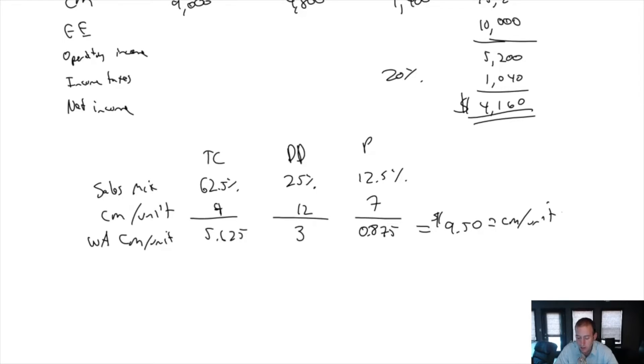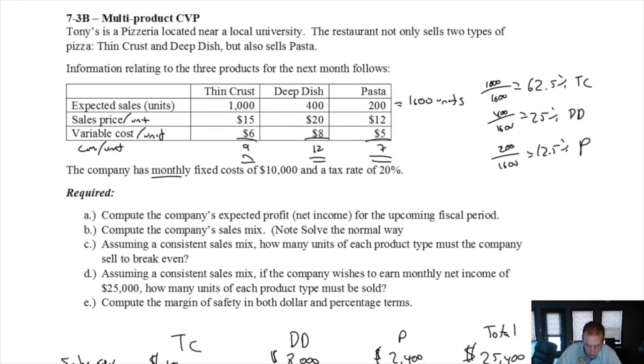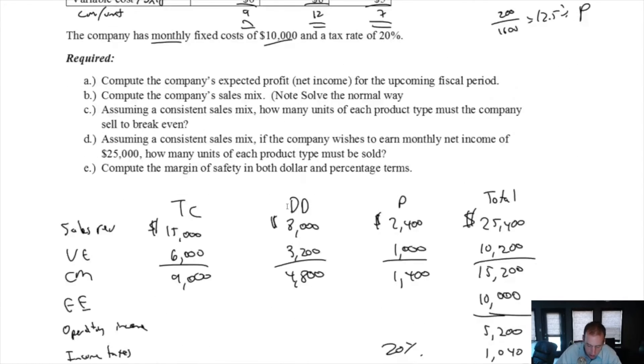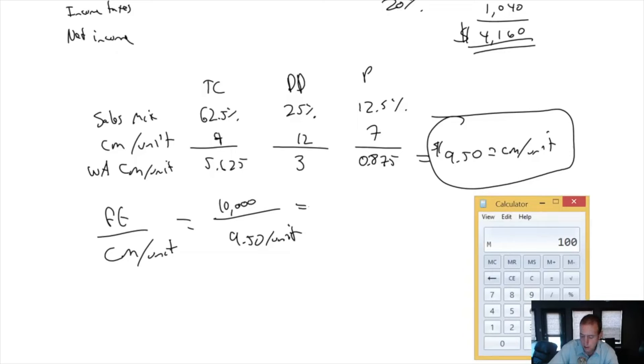Now let's figure out our breakeven point. That's going to be the number we use for CM in our breakeven point calculation. Fixed expenses divided by CM per unit equals breakeven point. Our fixed expenses are $10,000 a month. Our CM per unit is $9.50 a unit.